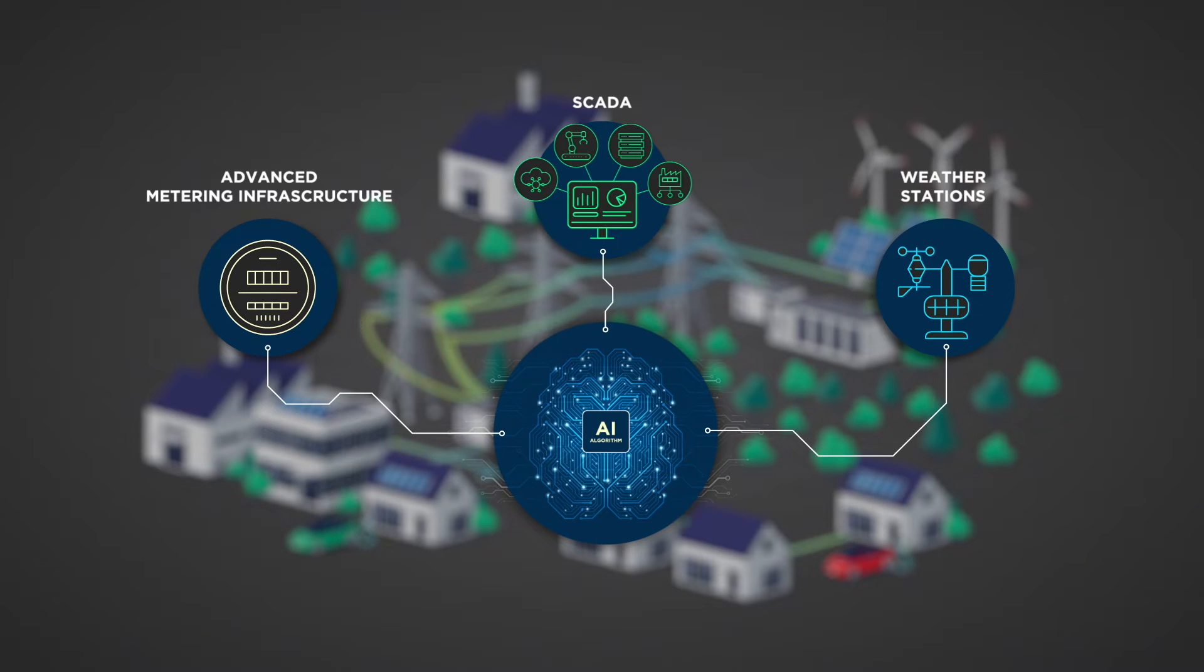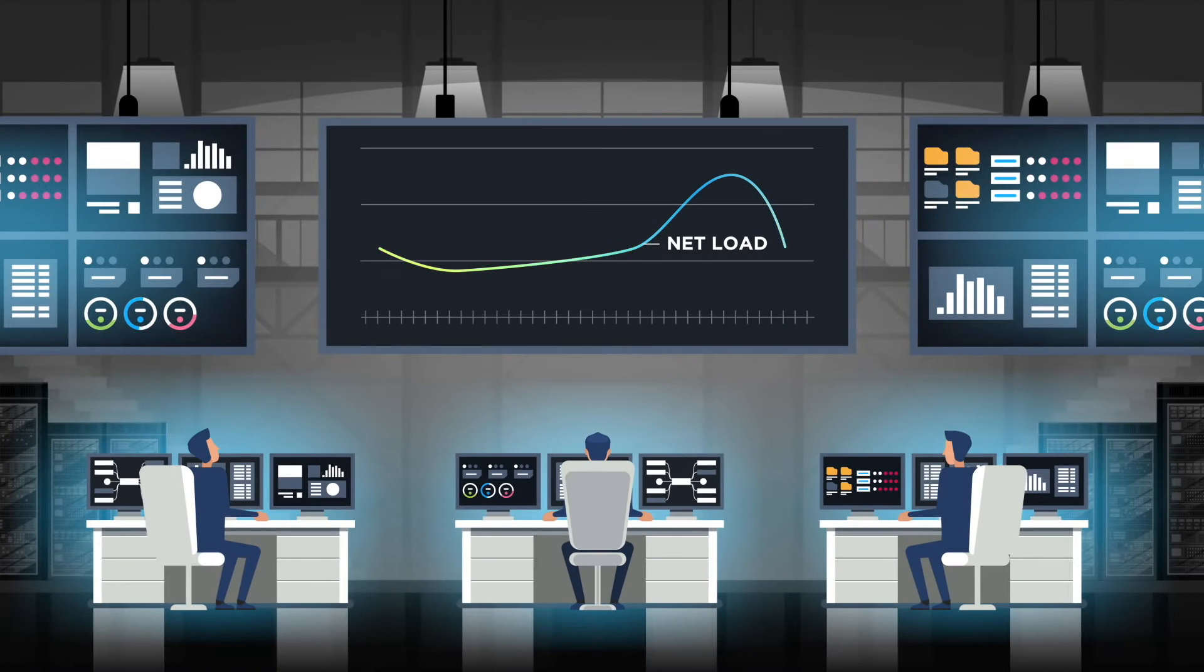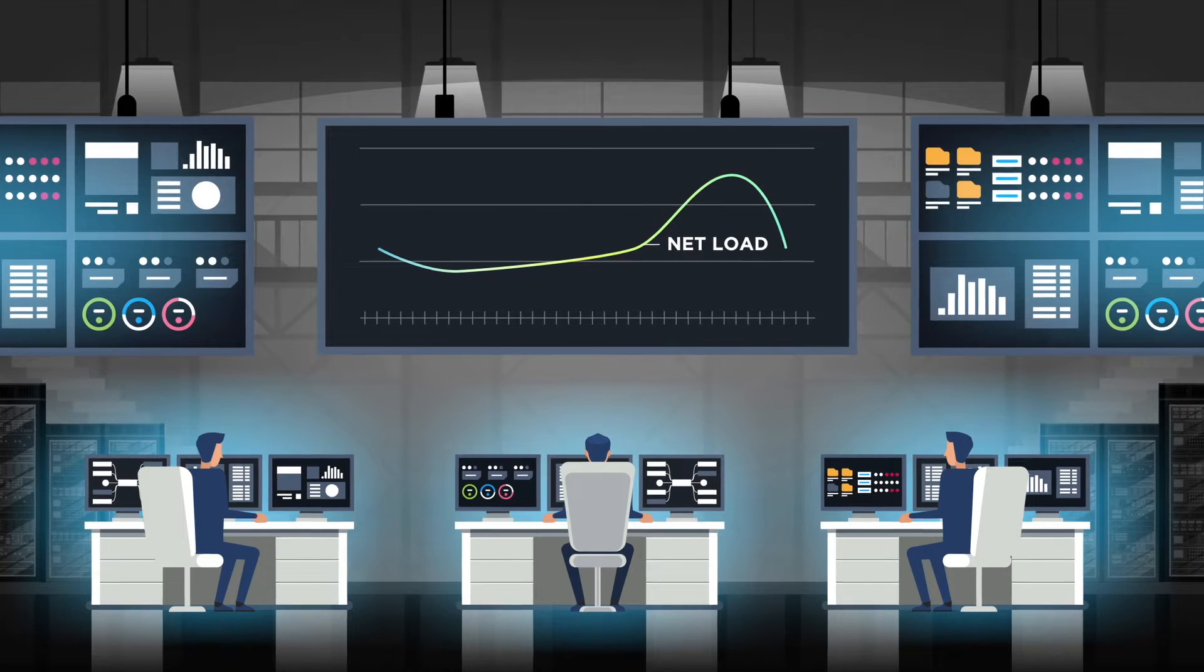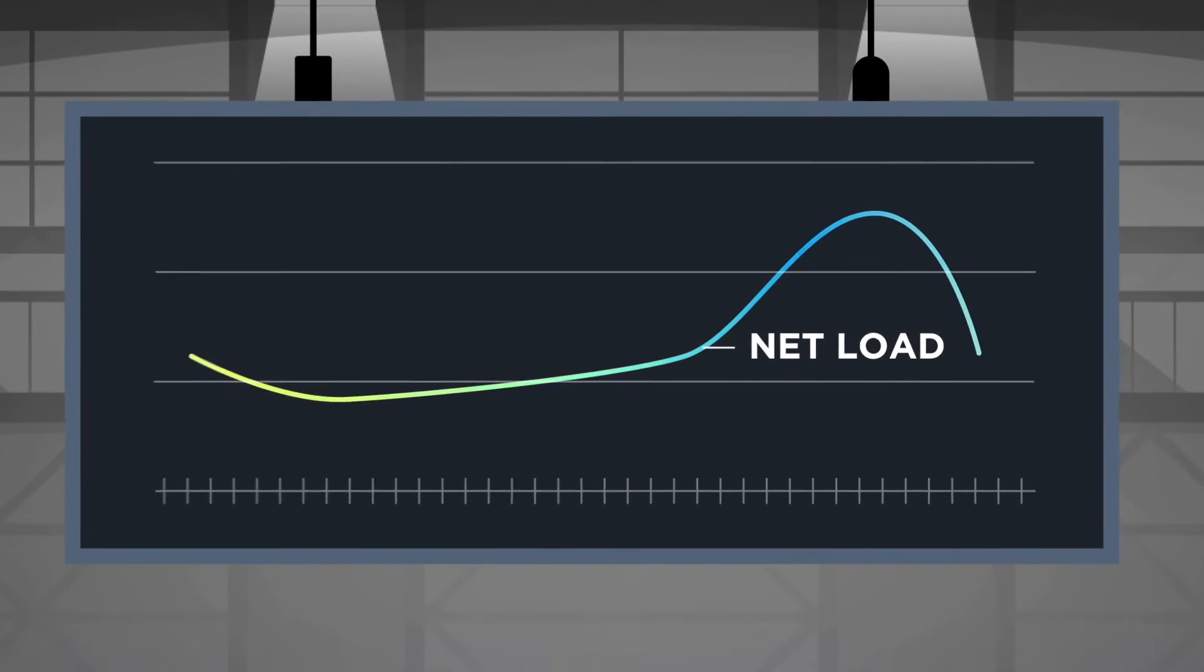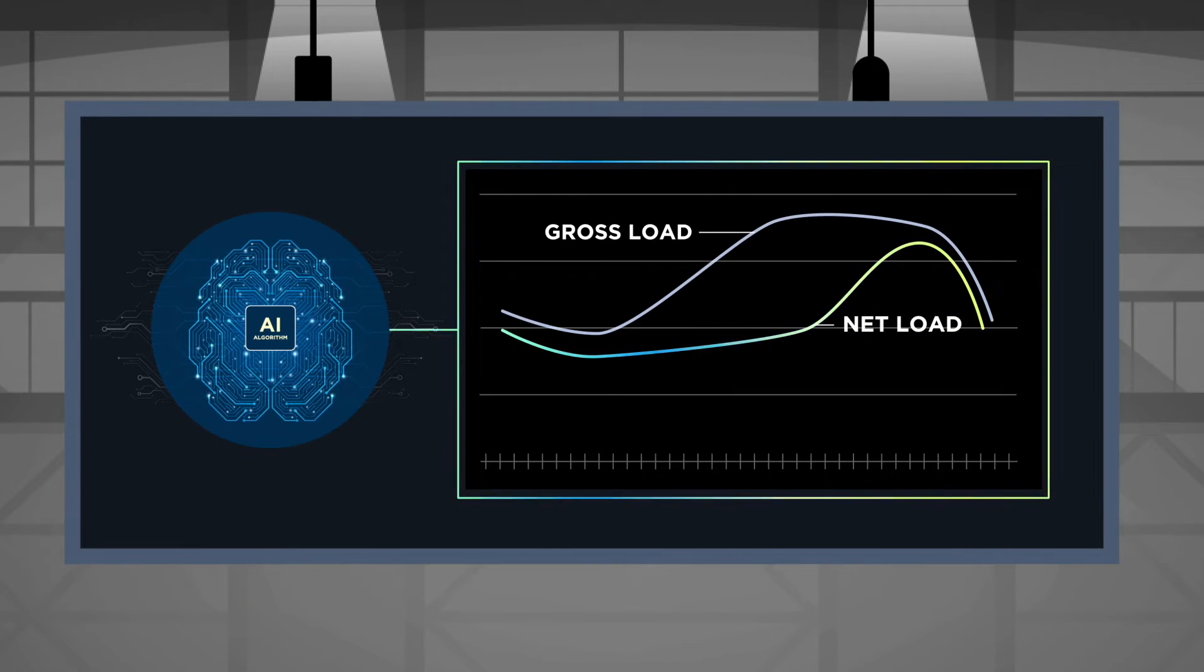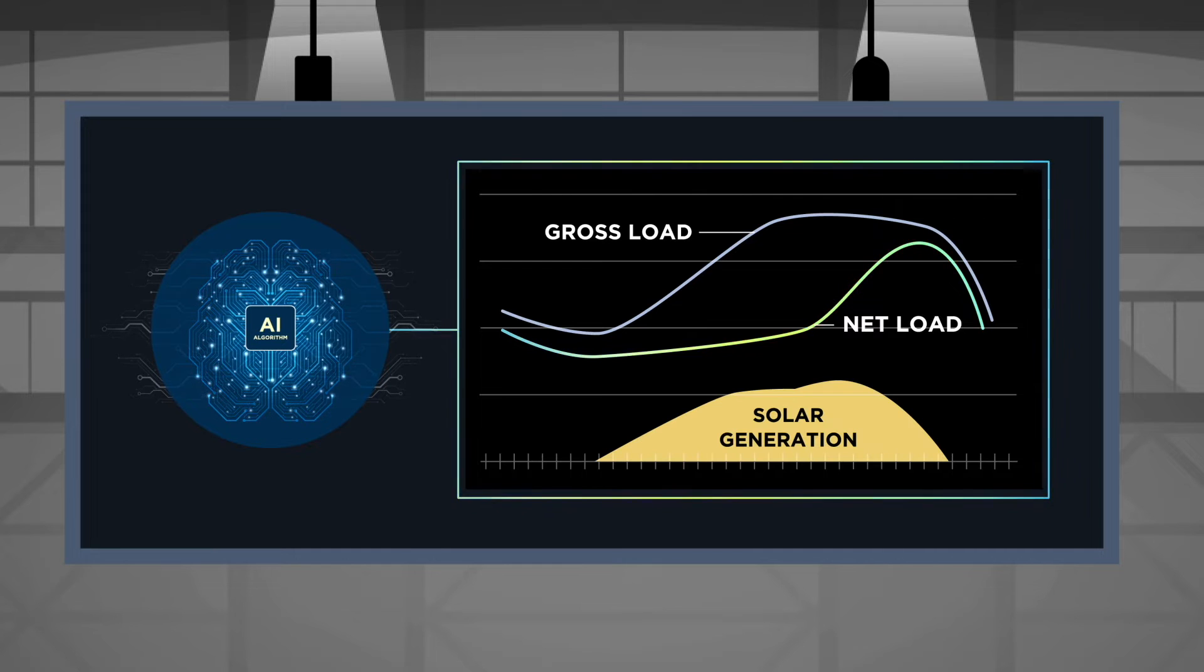This includes advanced metering infrastructure, SCADA, and weather stations. For distribution utilities with limited visibility to behind-the-meter solar generation, the EPRI algorithm can accurately separate net load data into gross load and behind-the-meter solar generation.